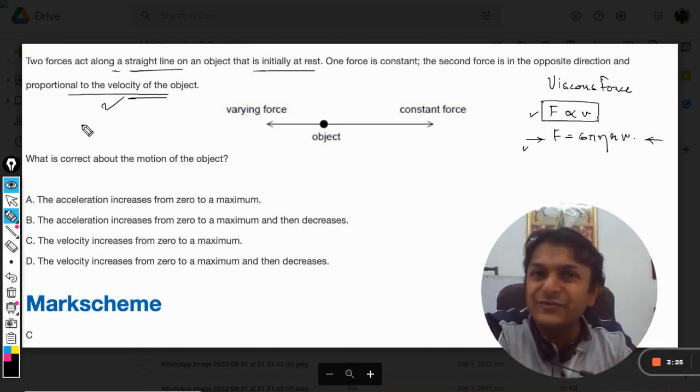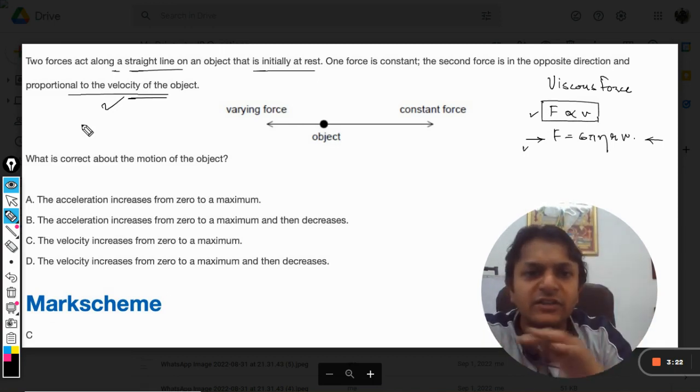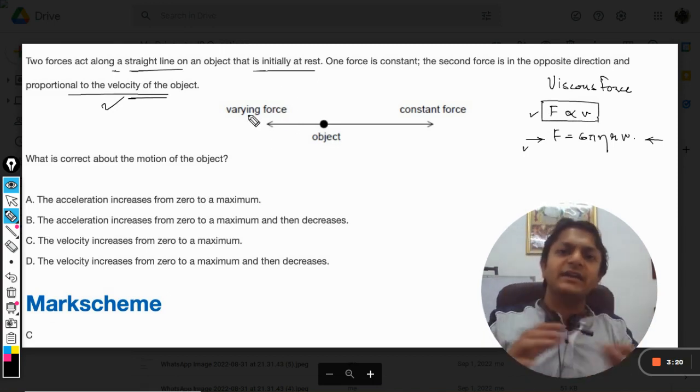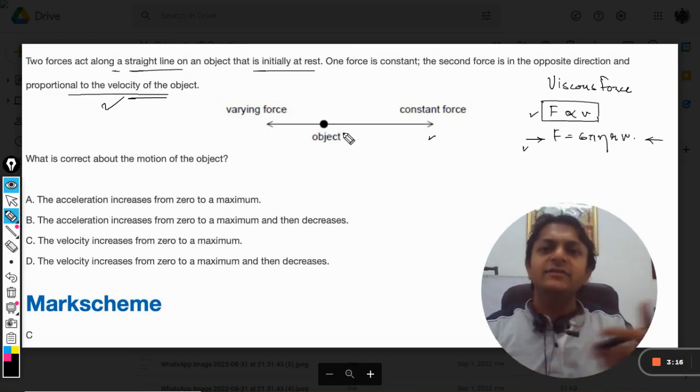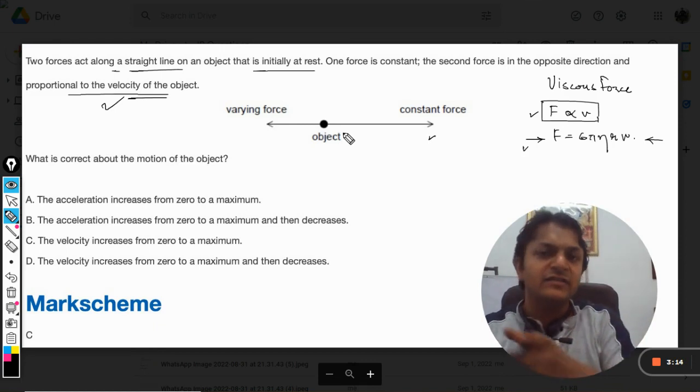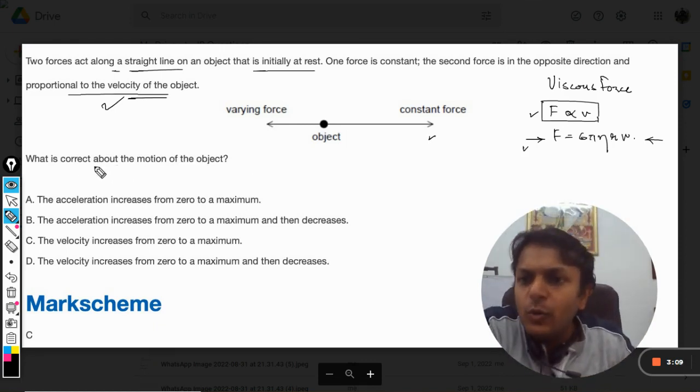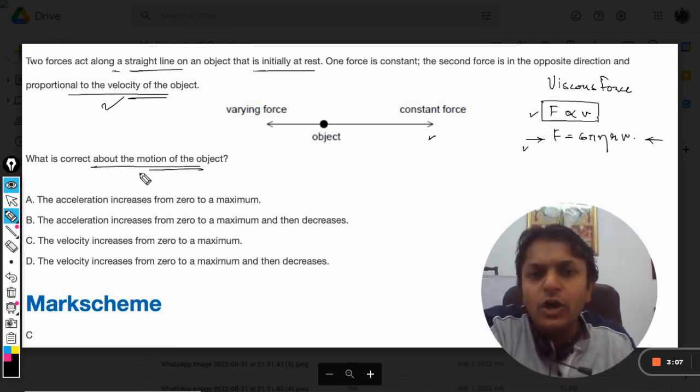Because it is a viscous force, it is acting like friction and so that is why this force will be acting in the backward direction. Now, a constant force is applied in the front direction and there is a backward force which is in the opposite direction. So what is correct about the motion of the object?